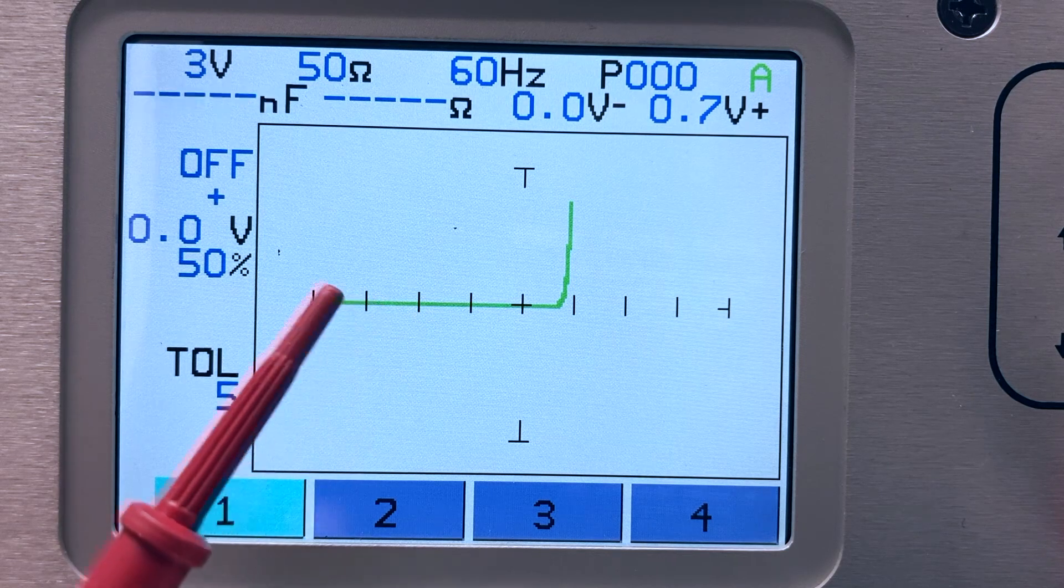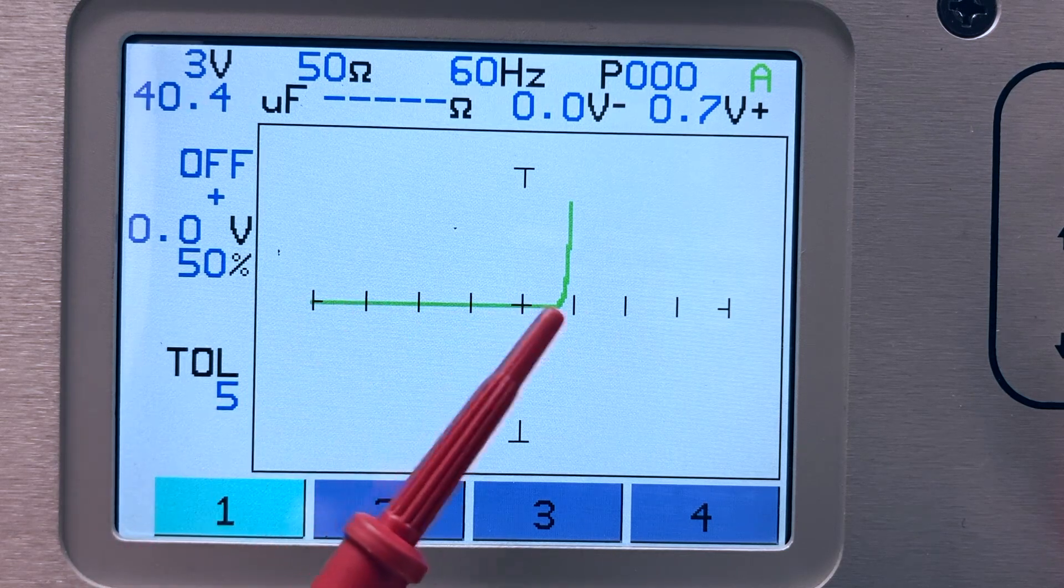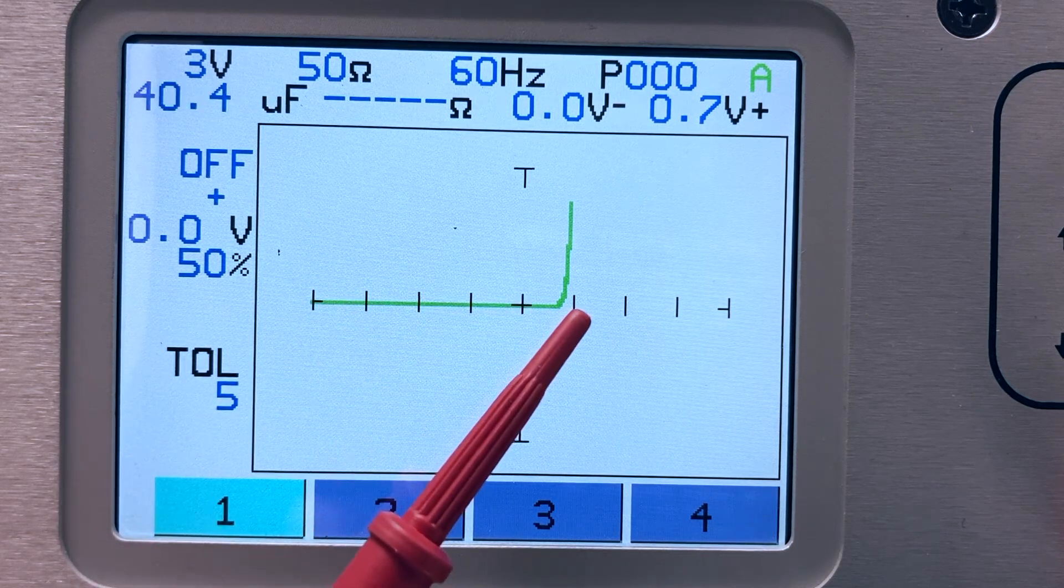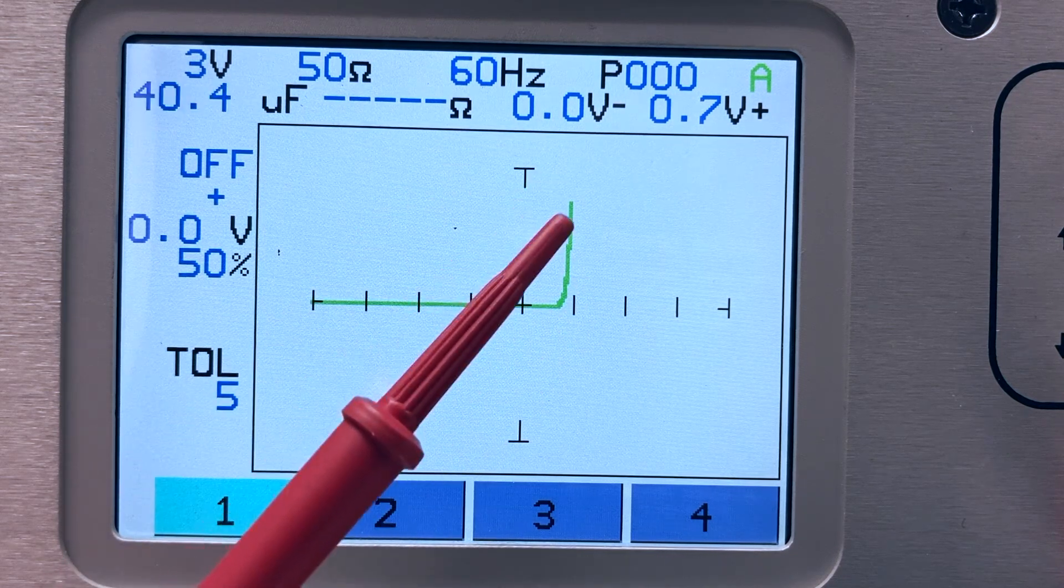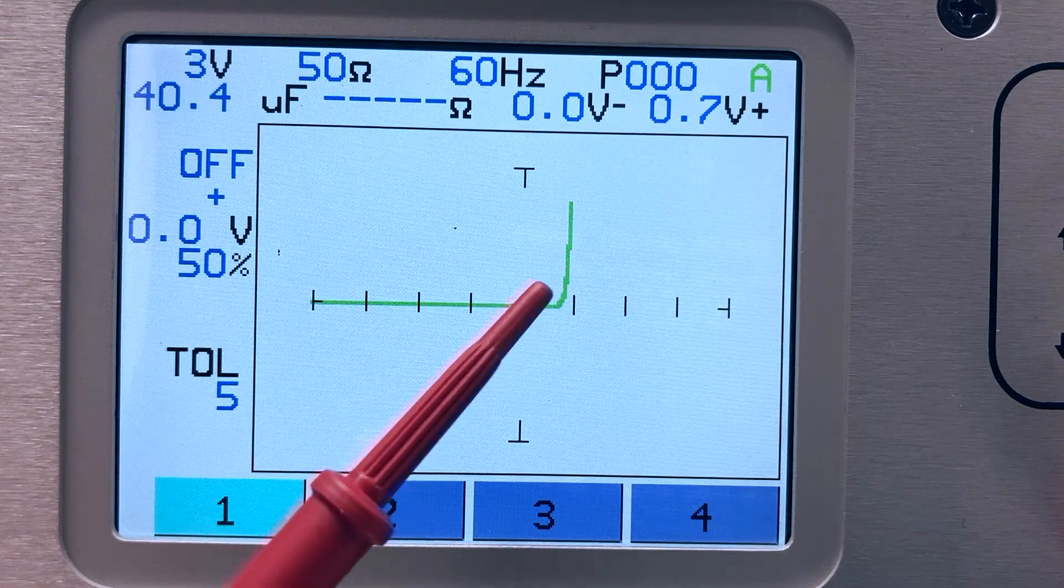The horizontal portion of the signature shows the diode in its off or non-conducting state. When the voltage reaches a positive 600 millivolts, the diode turns on and conducts current indicated by the vertical portion of the signature.